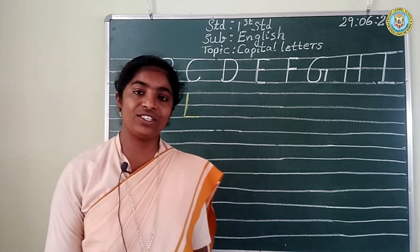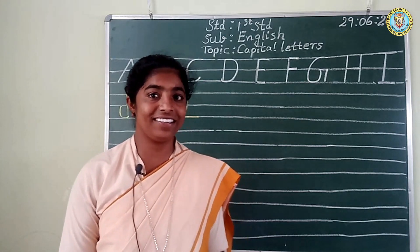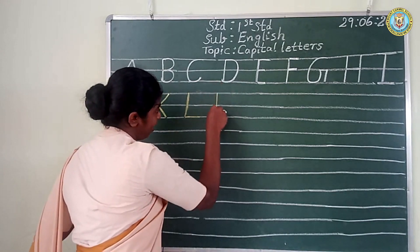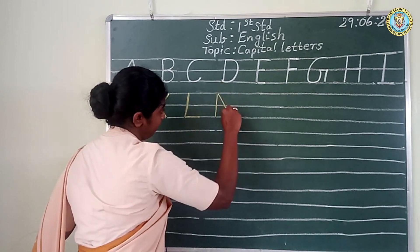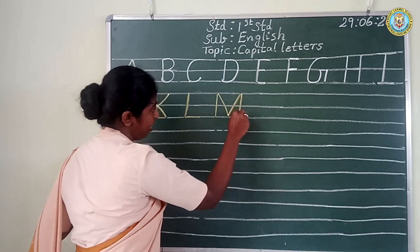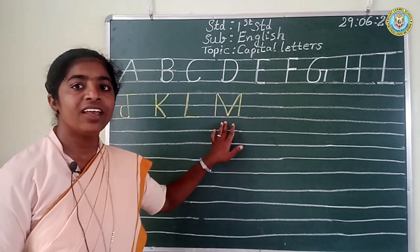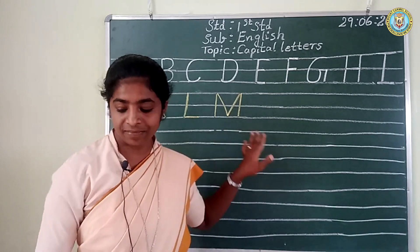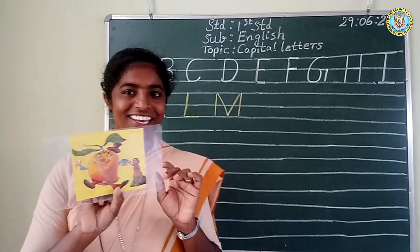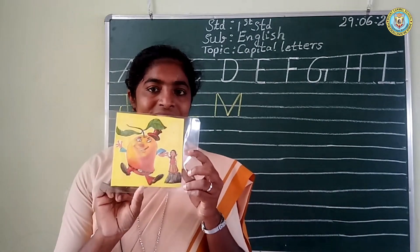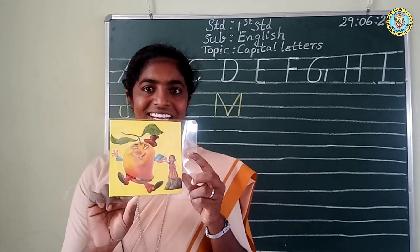Which is the next letter, children? Yes, it is M. Look at the board. The straight line and the slanting line, another slanting line and straight line. M. Look at the board, it is M. M for mango. M for mango. Yes, we all have eaten mango.